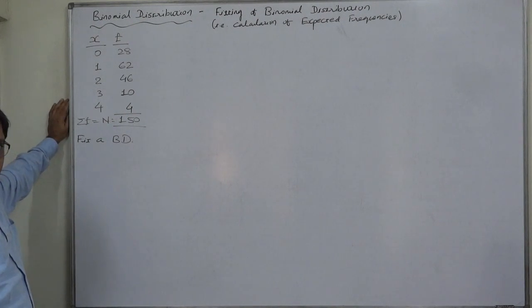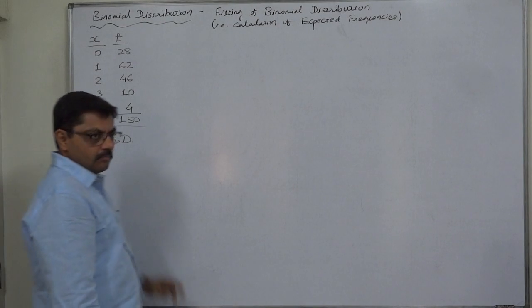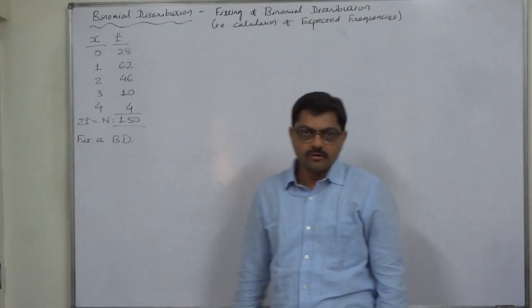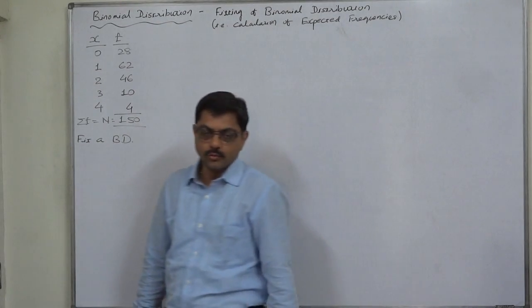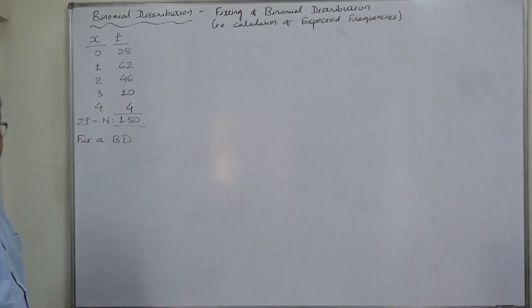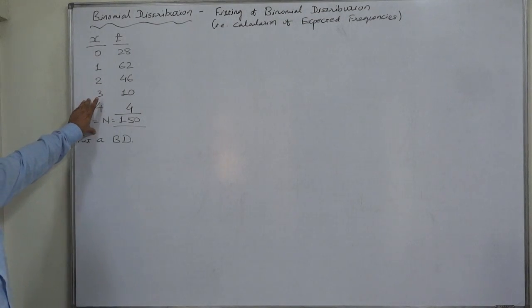How? Because for a binomial distribution we should have small n, p, and q. But we have a way. If we calculate the mean of this distribution and if we believe that this is a binomial distribution, mean is np.